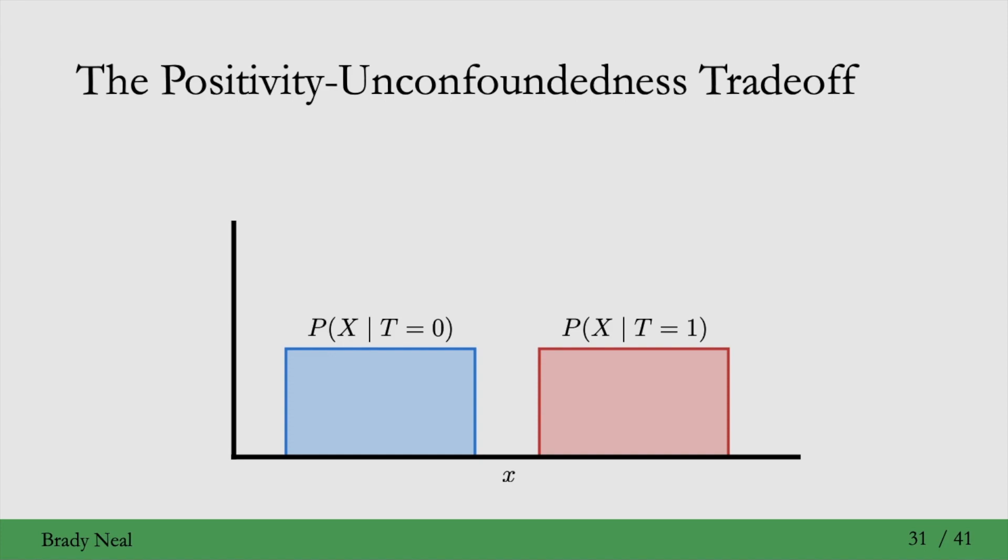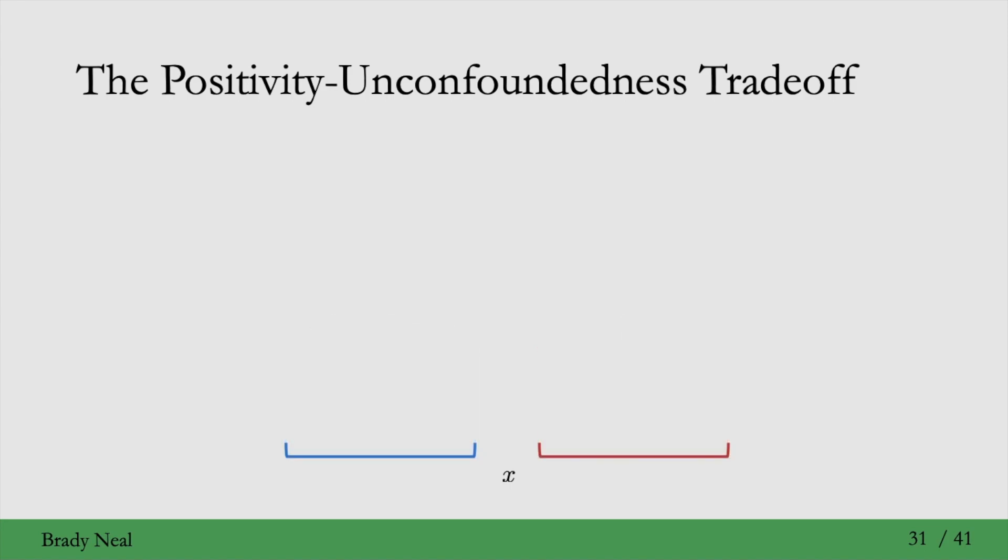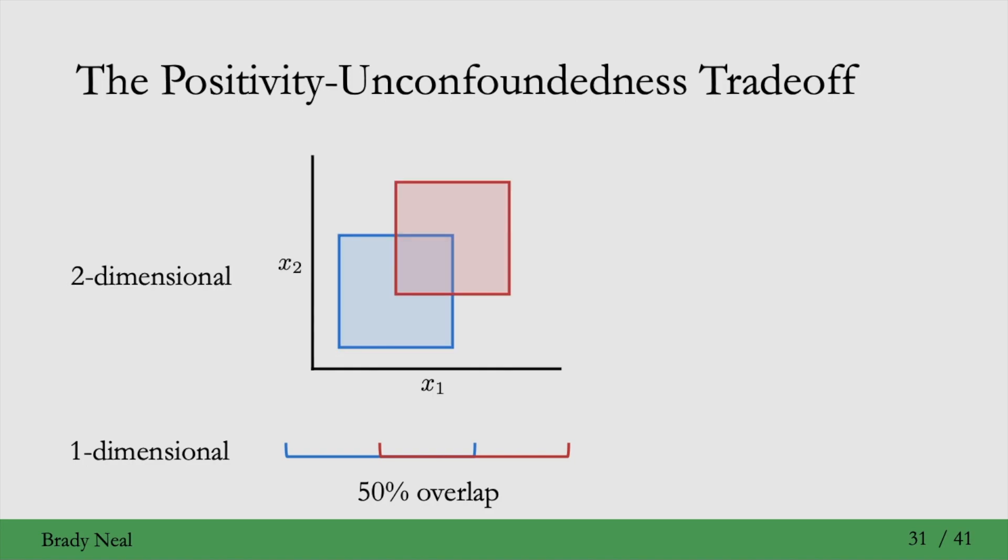To see this, consider these two conditional distributions from the last slide. If we just look at their supports, say we consider the case where they're 50% overlapping. This is in one dimension, when the covariates are only one-dimensional. But in two dimensions, things get much worse. So if I just were to take that and extend it to two dimensions, you end up with only 25% overlap.